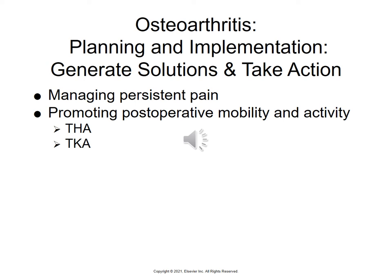For pre-op care and education for patients having a total hip arthroplasty: they will receive IV antibiotics and the procedure is done under general anesthesia, though an epidural or nerve block may also be used to ensure the patient feels nothing. They may receive tranexamic acid, which is an antifibrinolytic that will increase hemoglobin and hematocrit and decrease the need for blood transfusions.